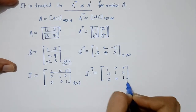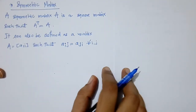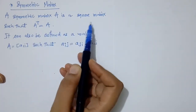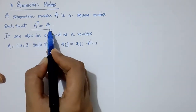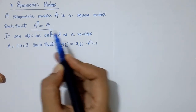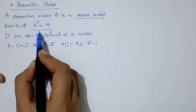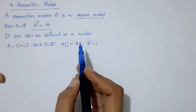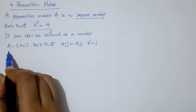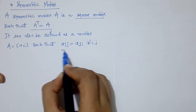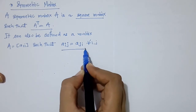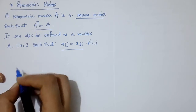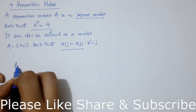Next we have the symmetric matrix. A symmetric matrix A is a square matrix such that A transpose is equal to A. It is a square matrix for which A transpose equals A. This matrix can also be defined as a matrix A for which A_ij is equal to A_ji for all i and j.